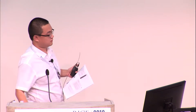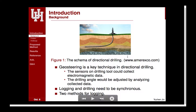Our problem is the geosteering problem. Geosteering means we use the collected data to adjust the well trajectory during directional drilling. During this process, the collected data are called measurements, and electromagnetic waves are a good measurement. This work can be divided into two steps: the first step is logging, which means analyzing the data, and the second step is using the data to control the drilling. For now, we only concentrate on the logging process, and we have two approaches: an on-ground method and an underground method.